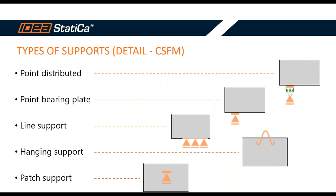In IDEA StatiCa Detail there are five types of supports, and the user might be confused or it may not be clear at first which support is the right one for your project. There are two subgroups: the first is point distributed, point bearing plate, and line support; the second subgroup is hanging and patch support. I will go through each support and explain the theory behind them with schemes, and show their application.